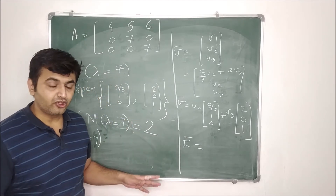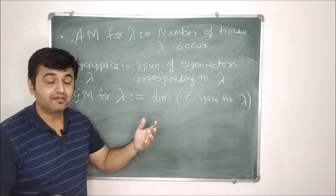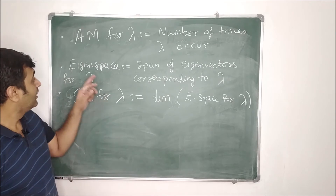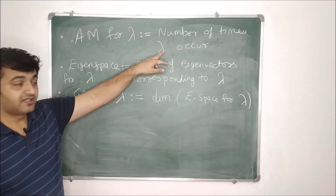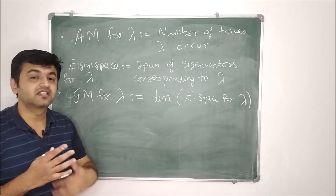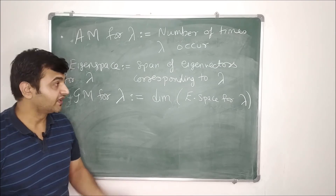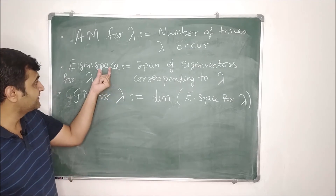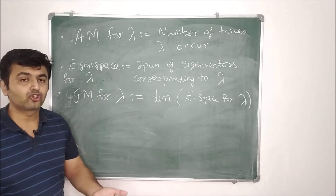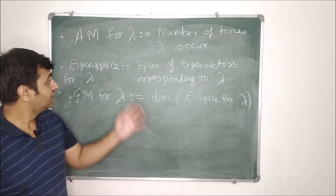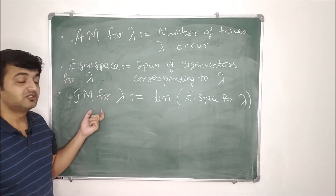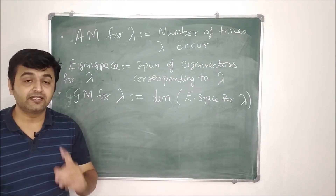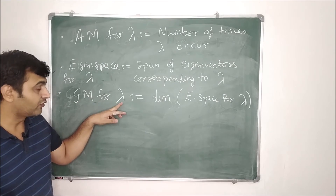To summarize: algebraic multiplicity is the number of times lambda occurs as a root of the characteristic equation. The eigenspace for an eigenvalue is found by finding the eigenvectors, then taking their span to form a subspace. The dimension of the eigenspace is the geometric multiplicity for that lambda — equivalently, it is the number of linearly independent eigenvectors for the eigenvalue lambda.